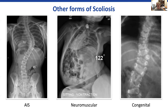The x-ray on the right shows an example of congenital scoliosis. If you look in the middle of that x-ray, you can see that there's a hemivertebra that didn't completely form between those two normal vertebrae around T11 and T12.